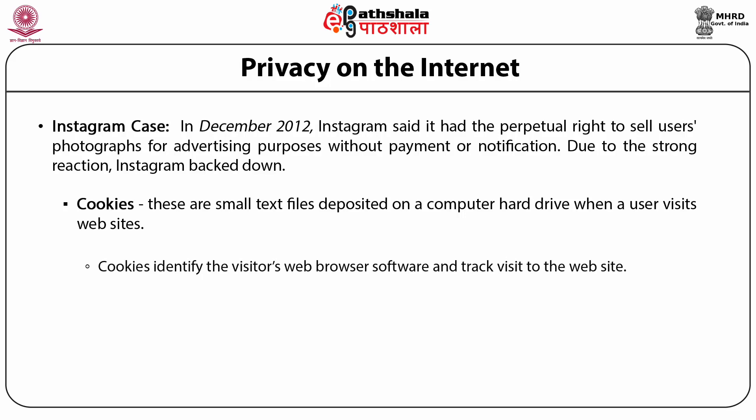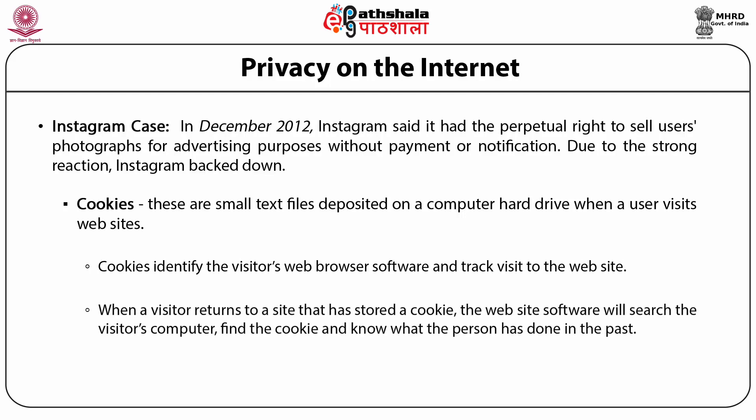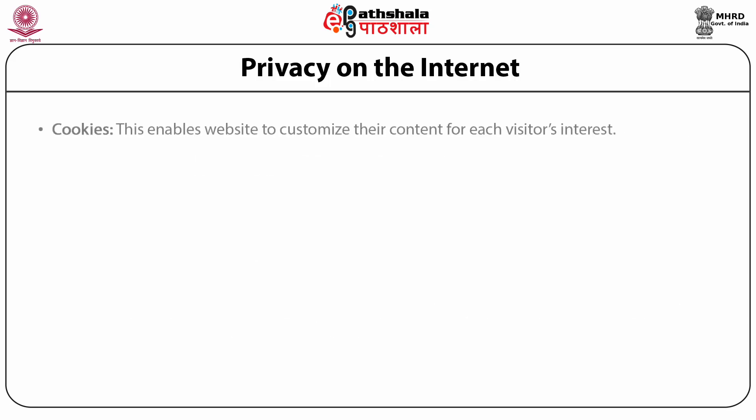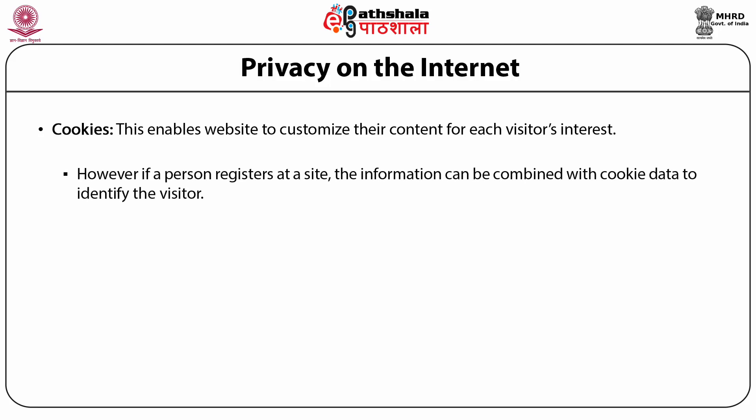Cookies are small text files deposited on a computer hard drive when a user visits websites. Cookies identify the visitor's web browser software and track visits to that particular website. When a visitor returns to a site that has stored a cookie, the website software searches the visitor's computer, finds the cookie, and knows what the person has done in the past. This enables the website to customize content for each visitor. Websites using cookie technology cannot directly obtain the visitor's name and address; however, if a person registers at a site, that information can be combined with cookie data to identify the visitor.